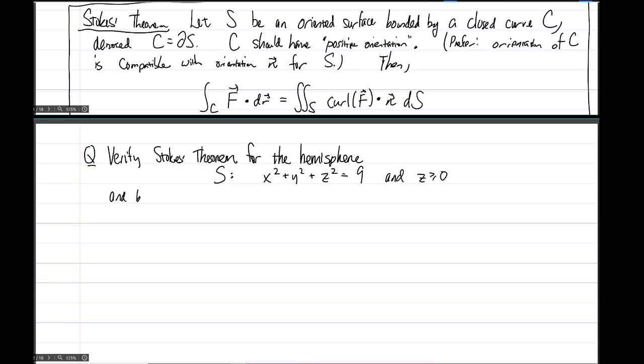And the bounding circle, the boundary is going to be a circle which we'll call C. It'll be x squared plus y squared equals 9 and z equals 0. So it's a circle of radius 3 in the x-y plane.